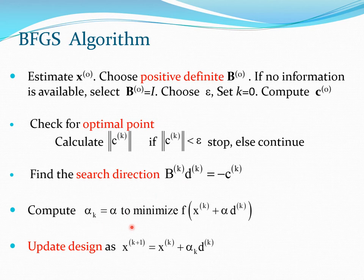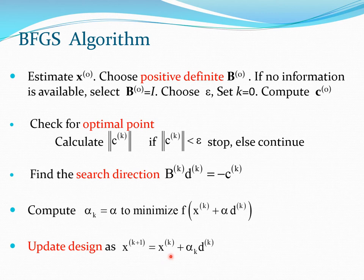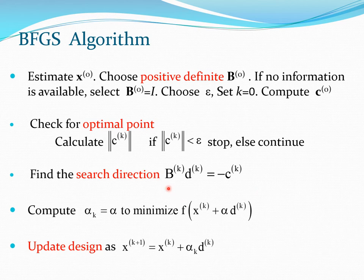Next, calculate the one-dimensional step size alpha that minimizes the function value at xk + alpha·dk. Once done, compute the new design vector xk+1 = xk + alpha·dk. Note that solving this linear system can be expensive, especially for large numbers of design variables. For a thousand-variable system you have a thousand-by-thousand matrix and thousand-by-one vectors, making it computationally expensive.